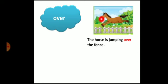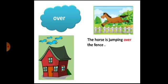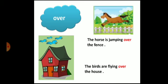The next preposition is 'over'. We use 'over' when talking about something that is above or higher than something else. Where is the horse? The horse is jumping over the fence — 'over' means above the fence. Now, where are the birds? The birds are flying over the house. So the word 'over' is a preposition.